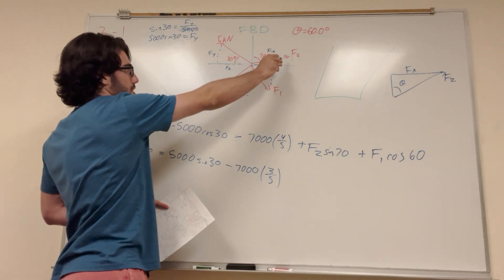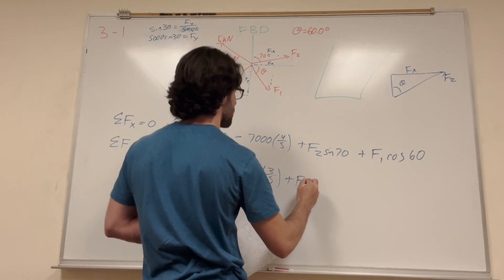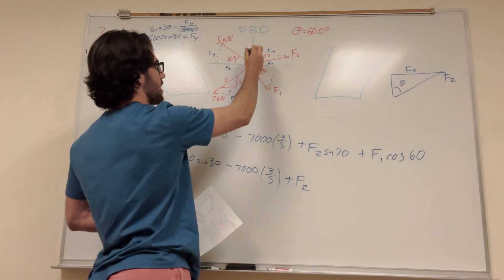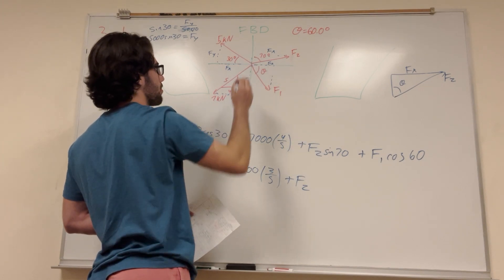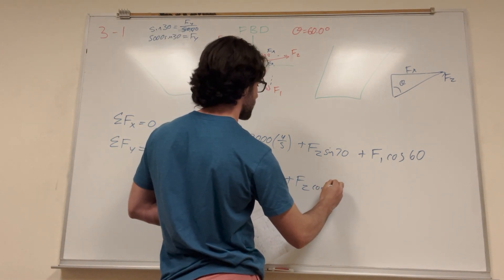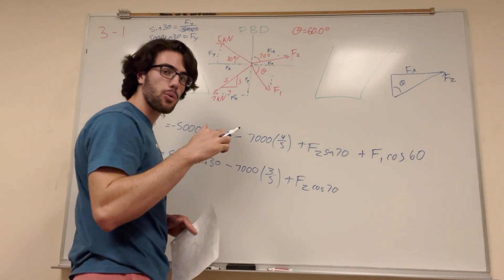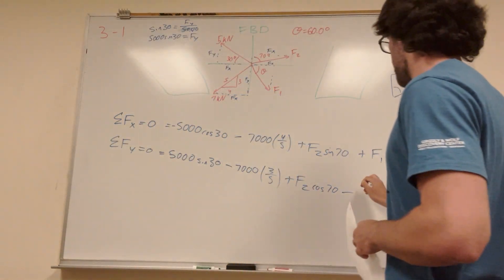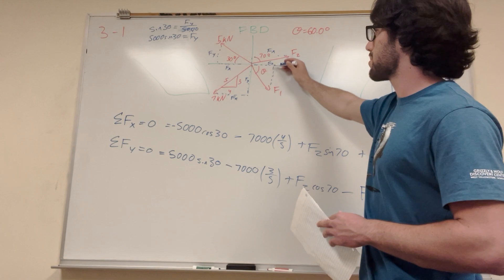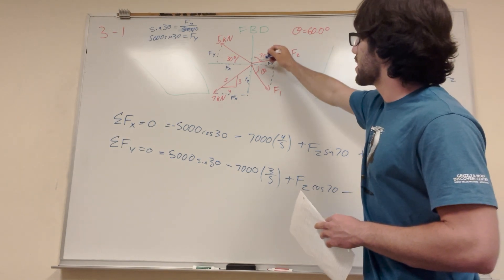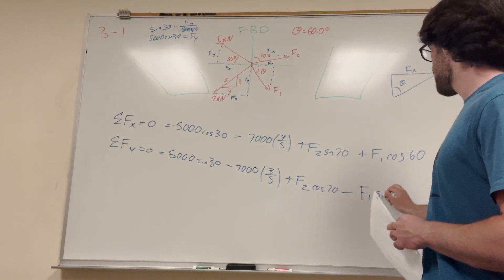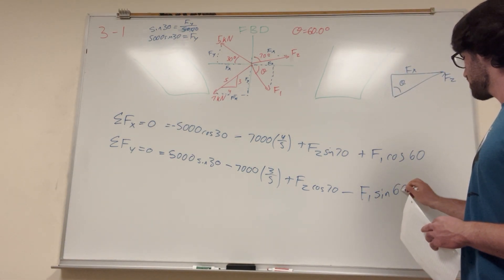For force 2 in the y direction, we use cosine of 70 because the y component is adjacent to the given angle — so it's a positive cosine of 70. Force 1 is pushing downward so it's negative. The vertical component is parallel to y and is the opposite side, so we use sine of 60. So: 0 = 5000 sin30 − 7000(3/5) + F2 cos70 − F1 sin60. Now we have two equations and two unknowns and can solve.